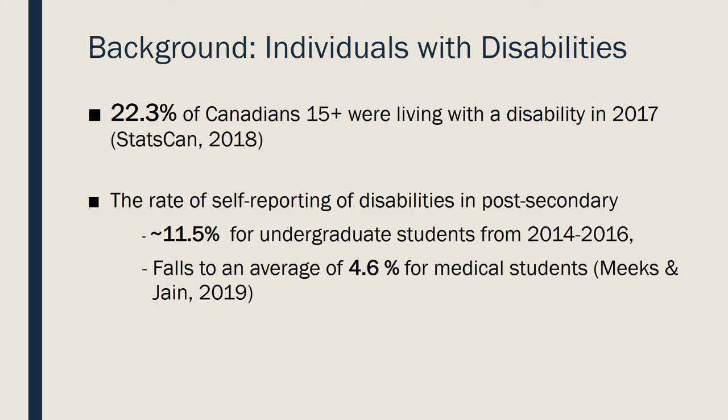To begin, I'd like to define the term disability more clearly. A disability is an impairment leading to limitations or restrictions occurring in day-to-day life, referring to a wide range of impairments including physical, sensory, motor, neurological, psychological, and learning disabilities lasting six months or longer. In 2017, 22.3% of Canadians 15 and older reported having a disability. For students, self-reporting is close to 11.5% for undergraduates, yet falls to an average of 4.6% for medical students. A lack of knowledge about disabilities leads to negative attitudes and stigmatization, which are potential reasons for this under-reporting.